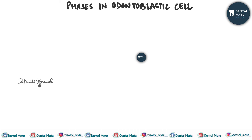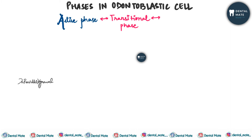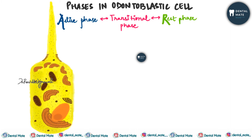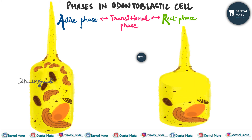There are three different phases in which an odontoblast cell cycles: active phase, transitional phase, and resting phase. The odontoblast in the active phase is elongated, whereas that in the resting phase is very stubby.